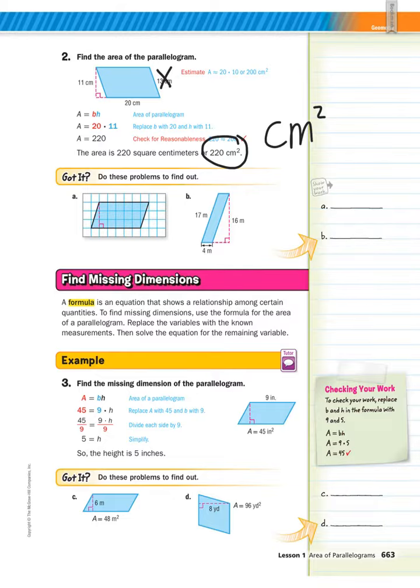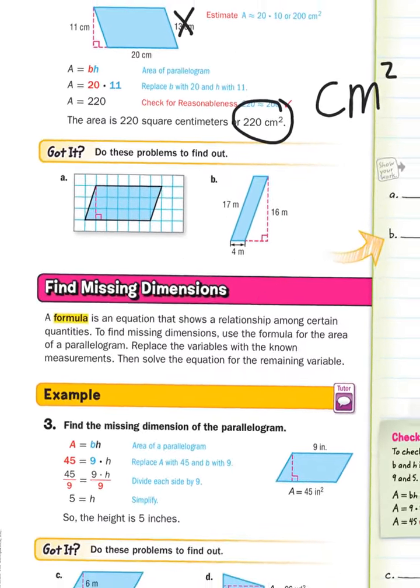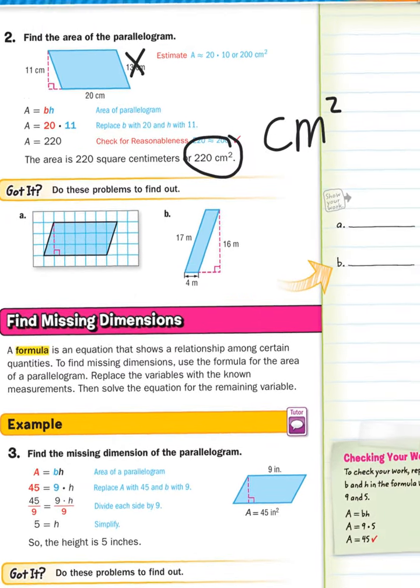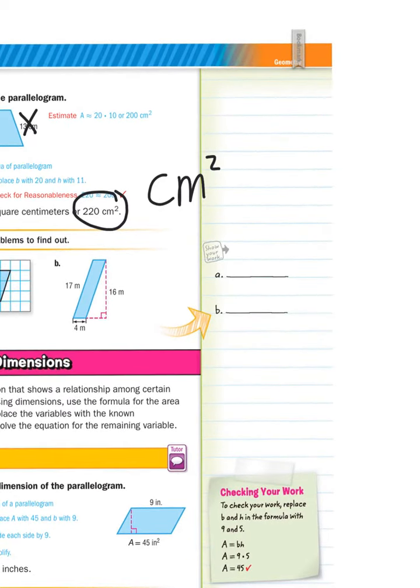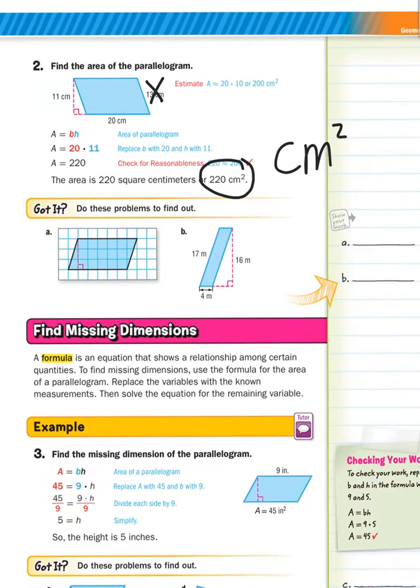Here is your job. Your job is to do problem A and B. Now, they don't give you a whole lot of room. So you may have to go over here and show your work in your workspace. But here's what you must do. You must, for both, write the formula, substitute, and solve. And you must have your unit like we did with square centimeters. Pause the video. Do A and B. And then get started. Go.